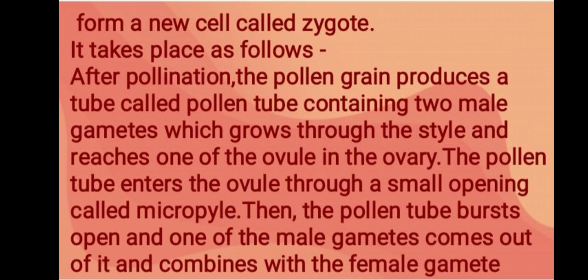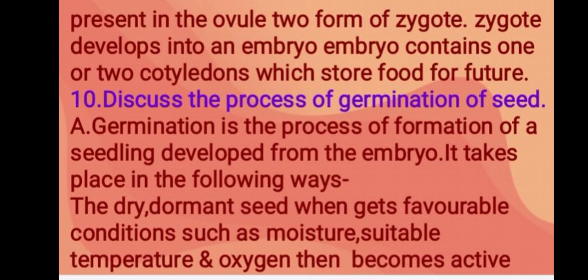After pollination, the pollen grain produces a tube called the pollen tube, containing two male gametes, which grows through the style and reaches the ovule in the ovary. The pollen tube enters the ovule through a small opening called the micropyle. The pollen tube bursts open and one male gamete fuses with the female gamete in the ovule to form a zygote. The zygote develops into an embryo, which contains one or two cotyledons that store food for the future.